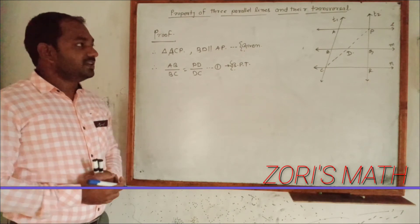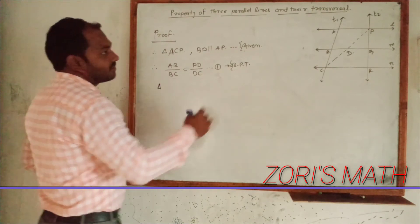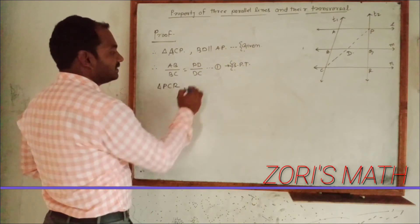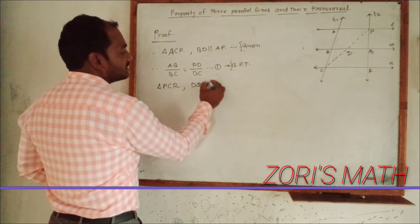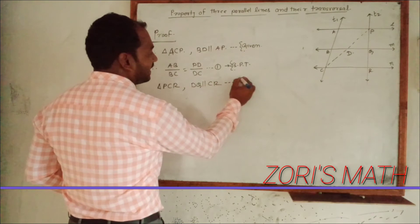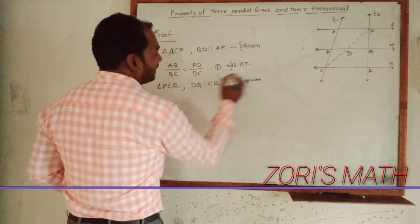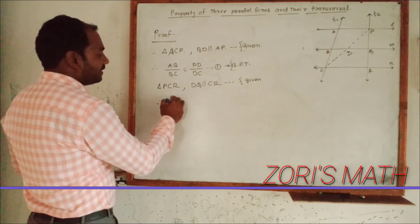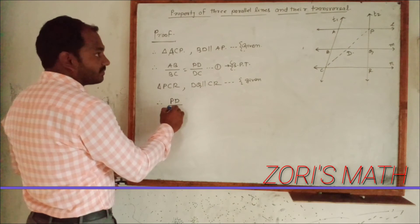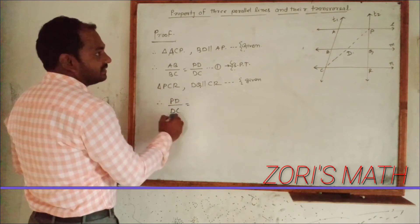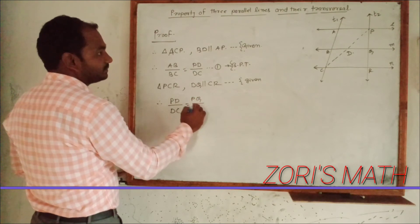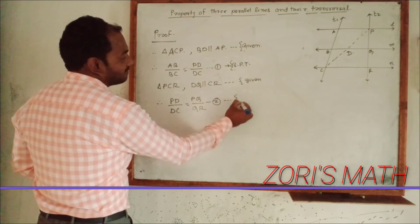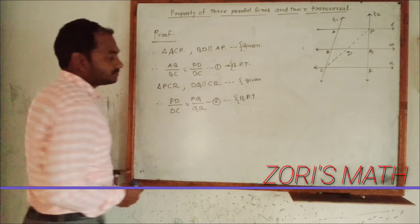Next, in triangle PCR, DQ is parallel to CR. Reason: given. Again we apply the Basic Proportionality Theorem. So in triangle PCR, we can apply PD upon DC equal to PQ upon QR. This is equation 2; reason: Basic Proportionality Theorem.